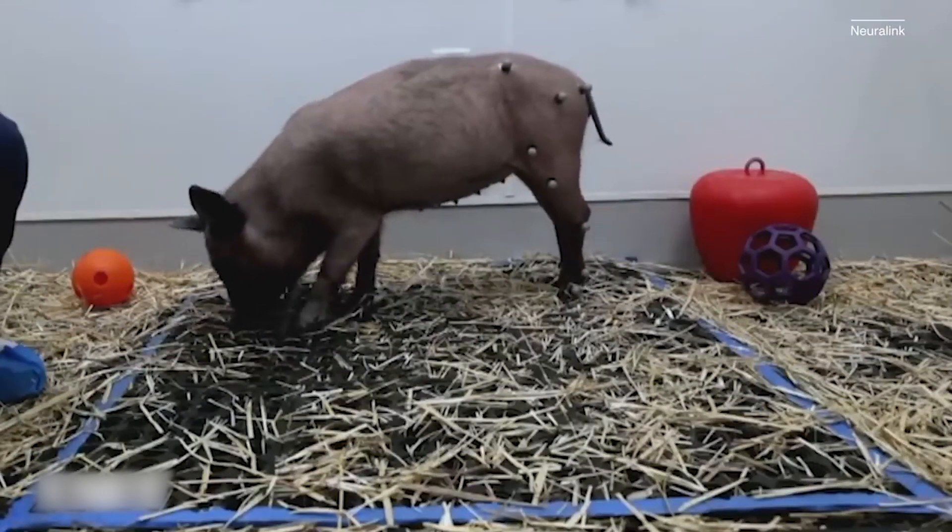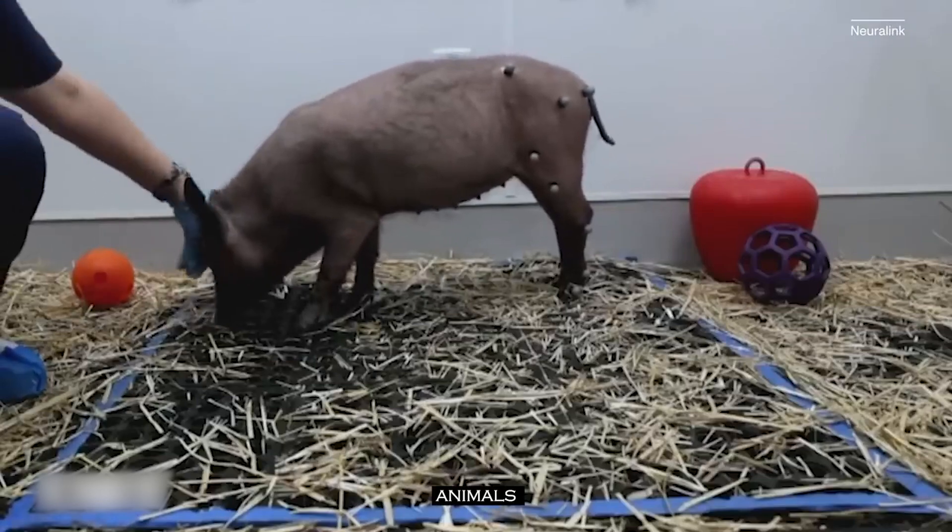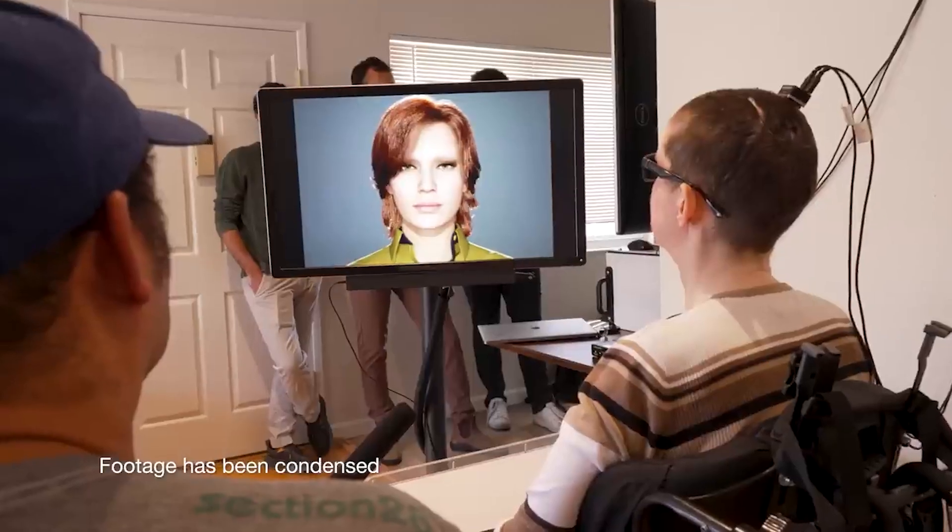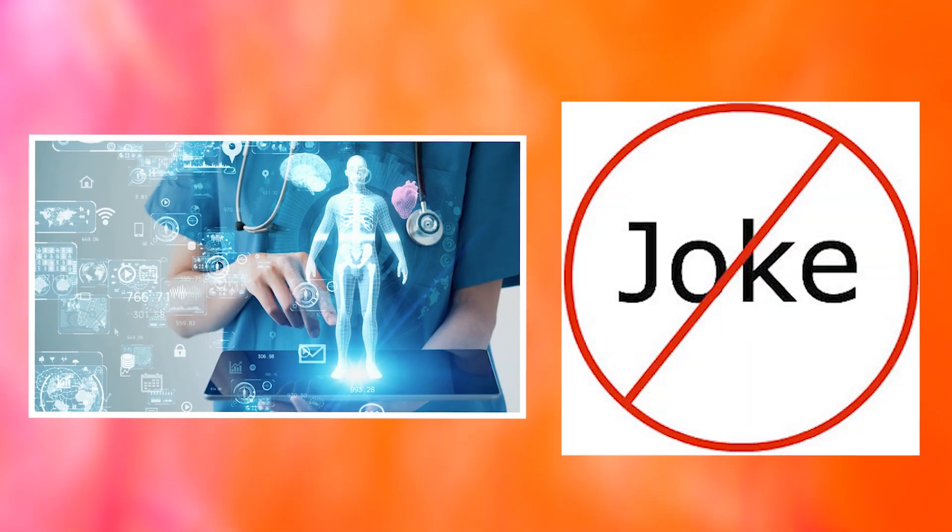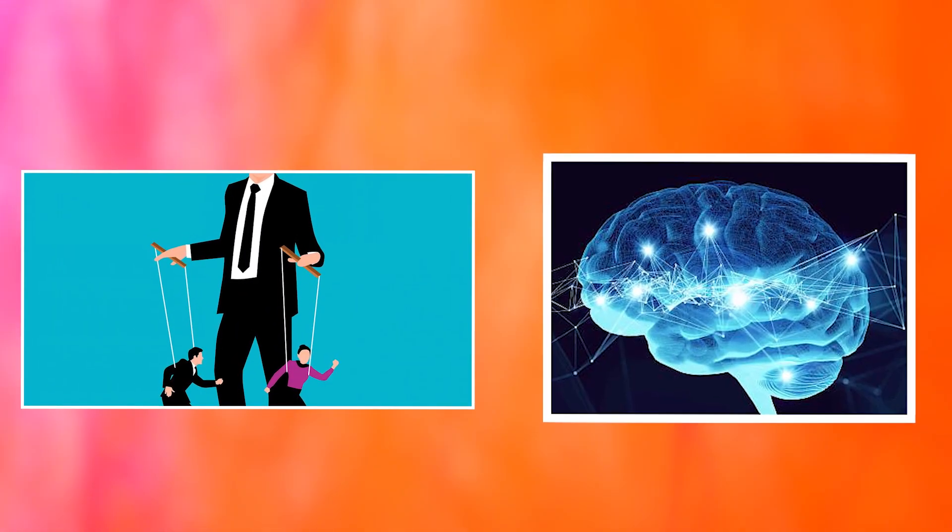Until last year, Neuralink had been conducting experiments and trials primarily with animals. The announcement of human trials, as mentioned in the news, would represent a significant step forward in realizing the company's ambitious goals. Human trials are no joke. But how do you actually control someone's brain and its activity?